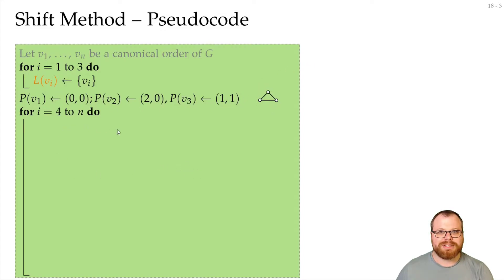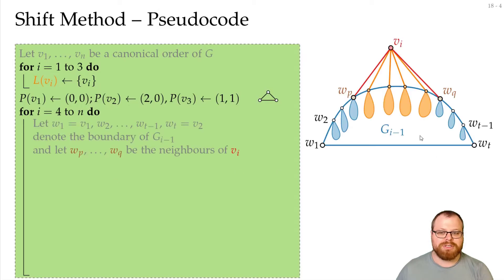And now we want to draw the remaining ones. So assume we've already drawn G_{i-1}, we have W_1 to W_t on the outer face, we have the neighbors of V_i are W_p to W_q. What do we have to do?